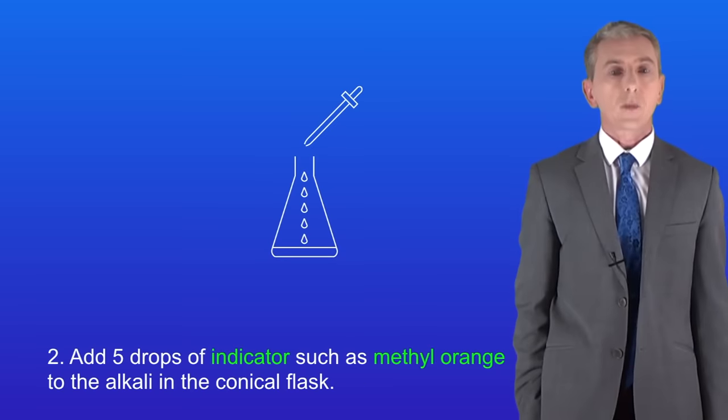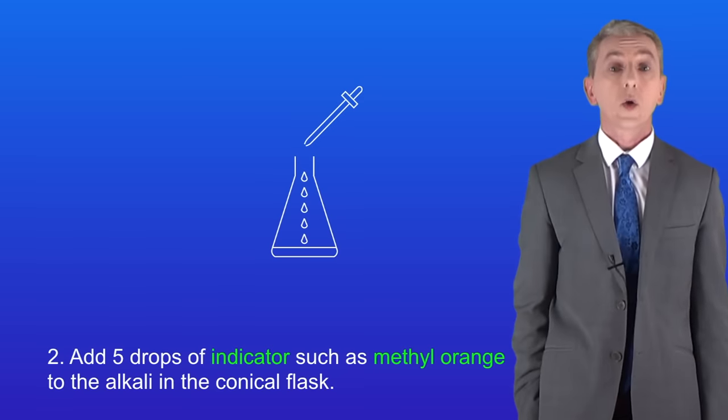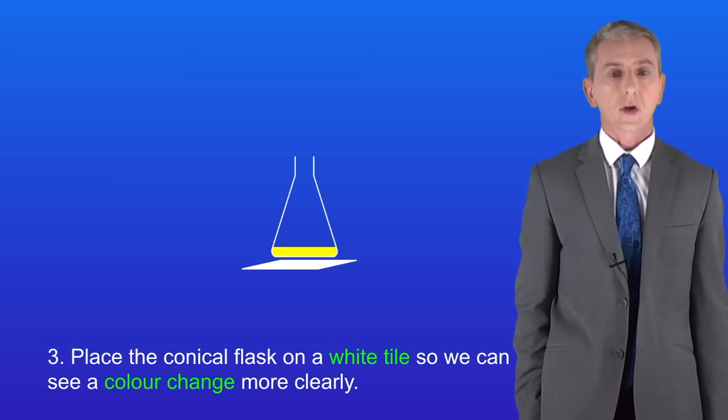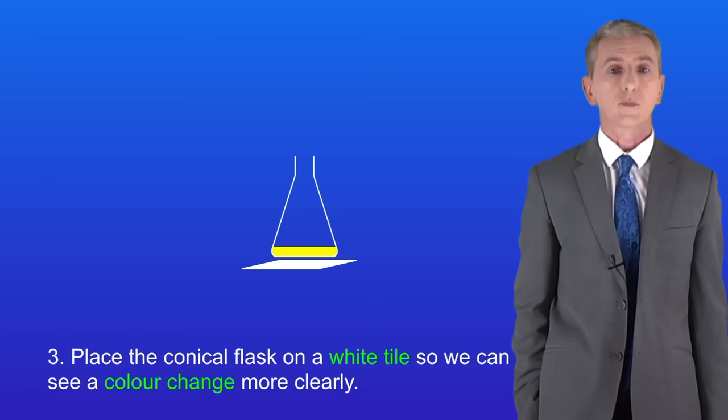Next we add five drops of an indicator such as methyl orange to the alkali in the conical flask. We could use other indicators such as phenolphthalein. Next we place the conical flask on a white tile so we can see a color change more clearly.